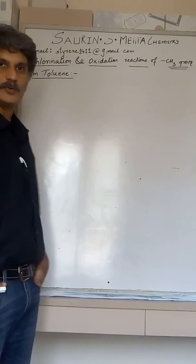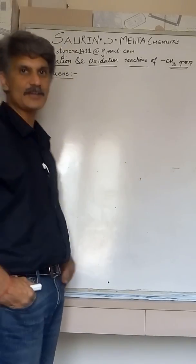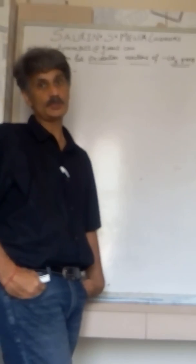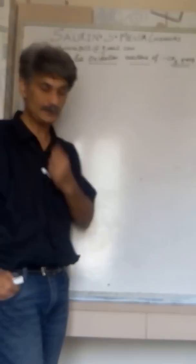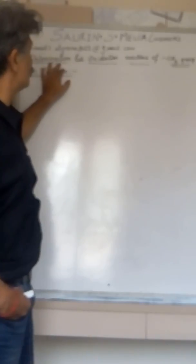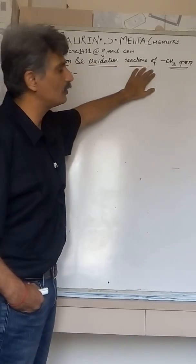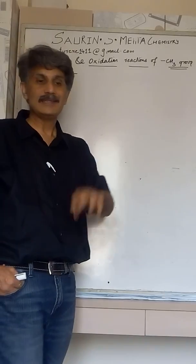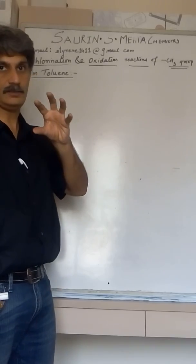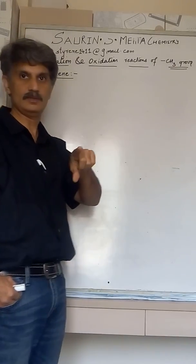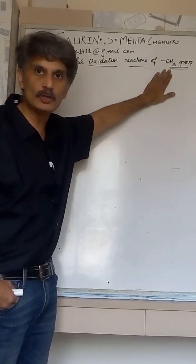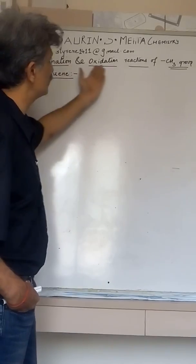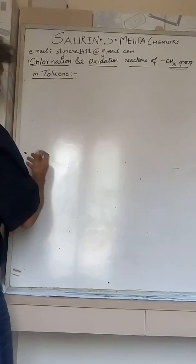Welcome back. In previous episodes we covered electrophilic substitution reactions of benzene and toluene. Today we are going to perform chlorination and oxidation reactions of the methyl group (CH3) present in toluene, where the benzene nucleus will not be affected — only the methyl group will undergo reaction, not the six carbon atoms of the phenyl ring.